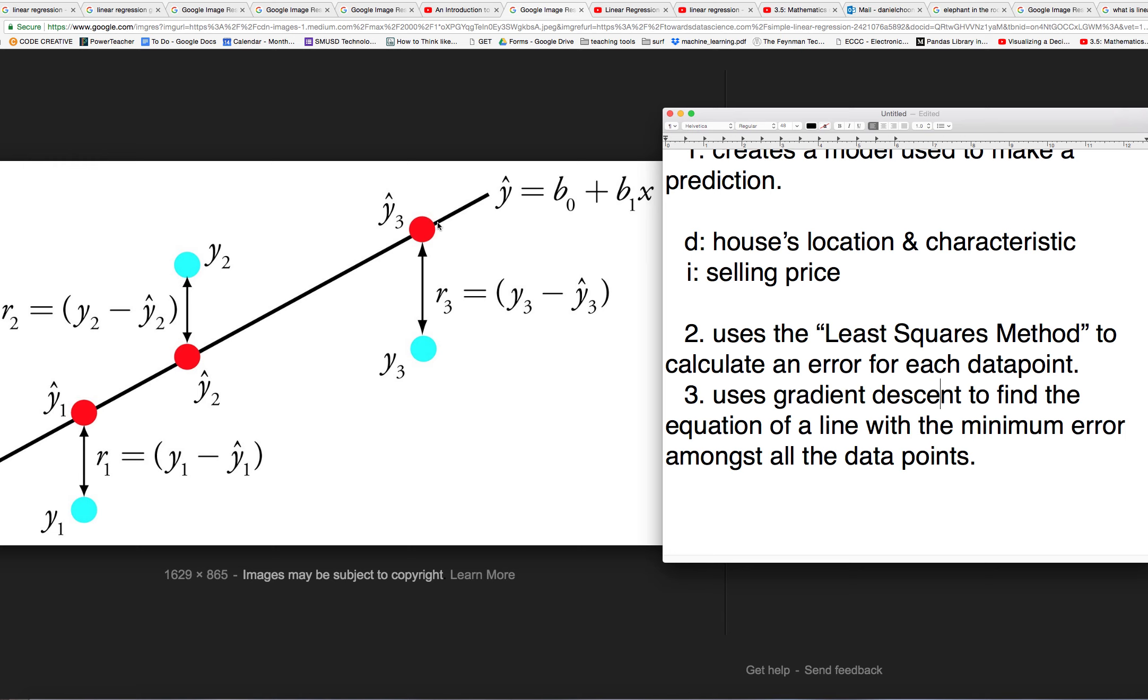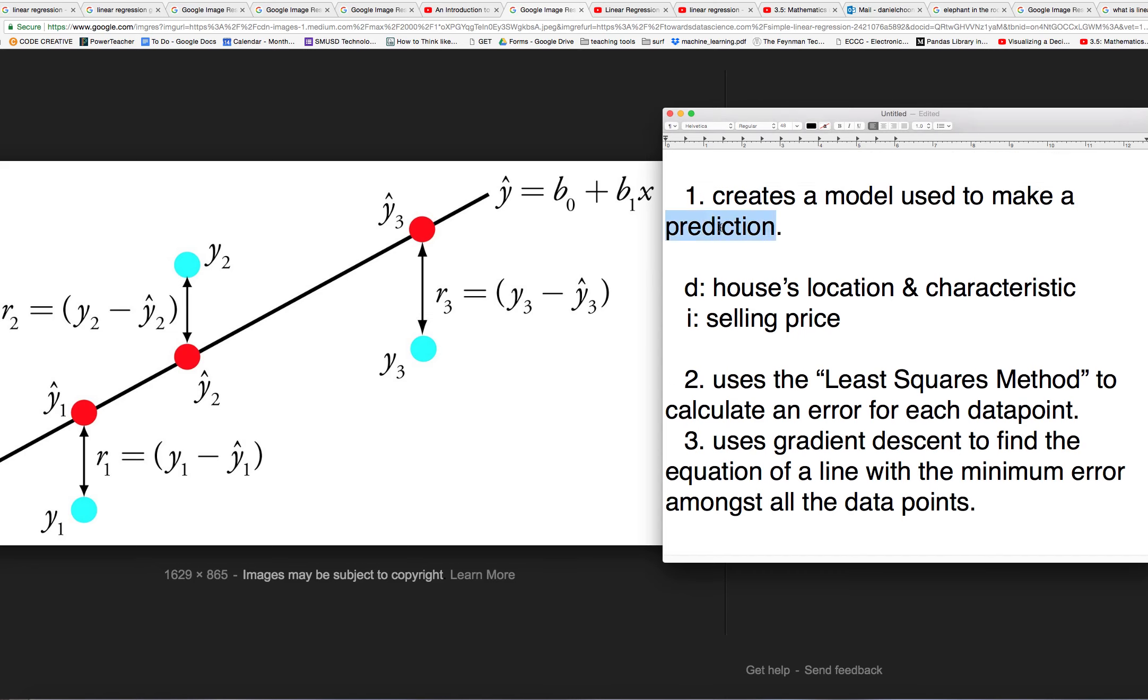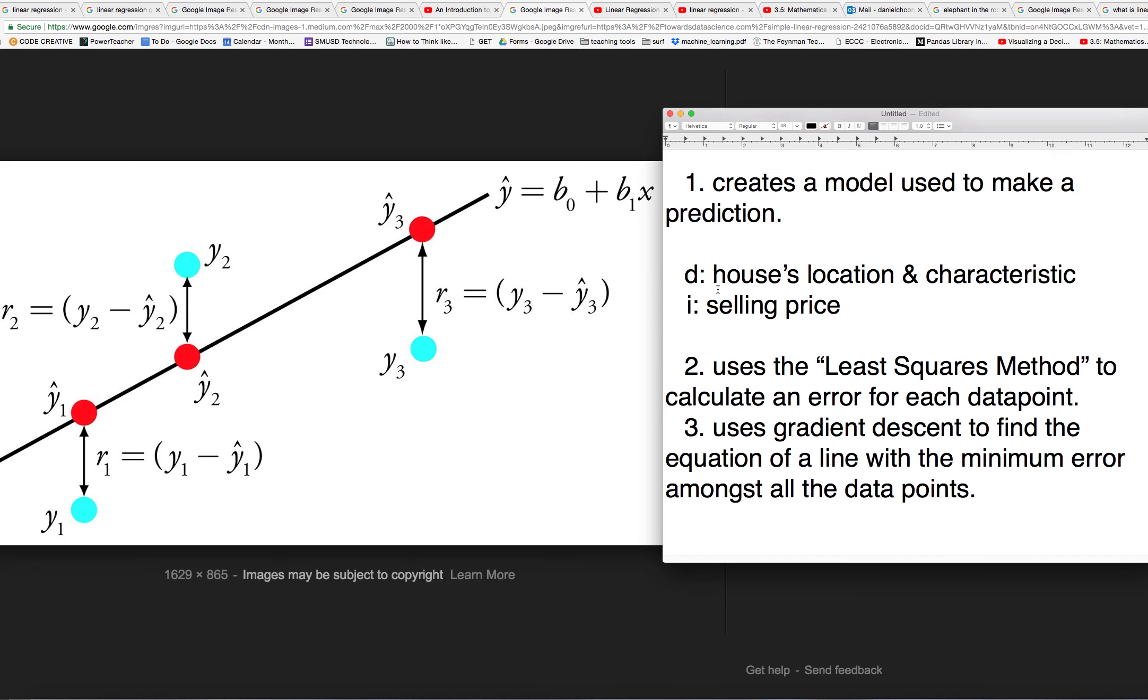And what is this line? This line is placed in such a way that it minimizes the amount of error of each data point to the line. So let's say here the grade is a C. And then the prediction on how many hours it took would be right here.